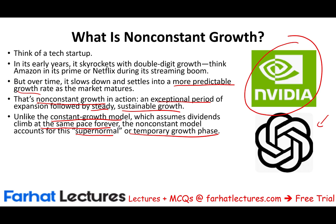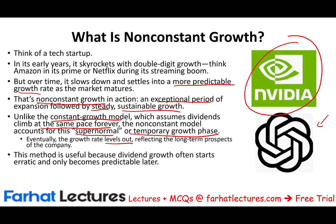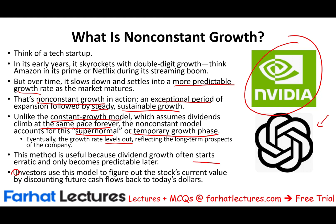We have to be realistic. Eventually, the growth rate levels out, reflecting the long-term prospects of the company. Dividend growth often starts erratic or at zero and only becomes predictable later when the company matures. Investors use this model to figure out the stock's current value by discounting future cash flows back to today's dollar. The formula is: discount the future dividend to present value, and that's your stock price. The only difference here is the dividends are not the same — they are growing at different rates.